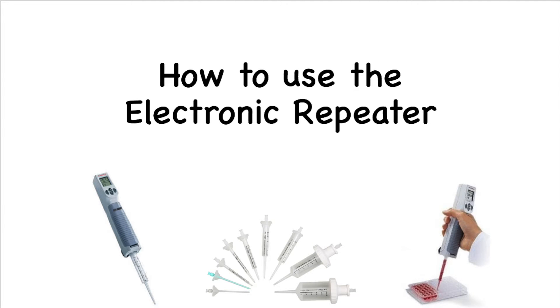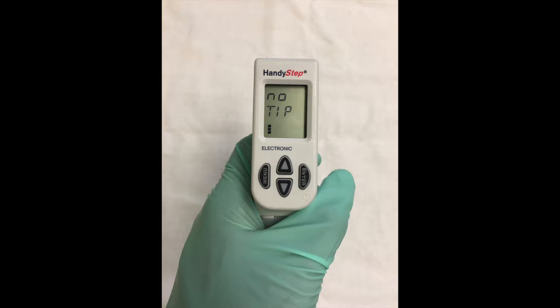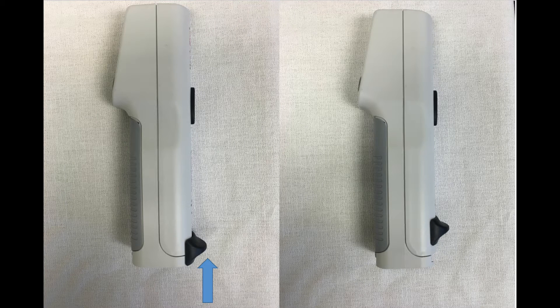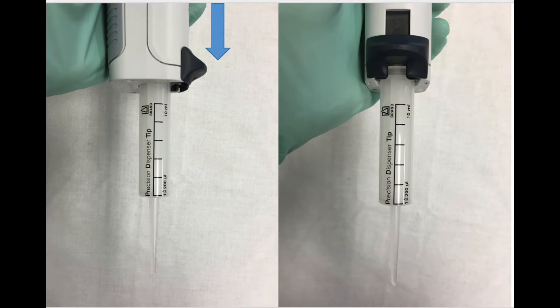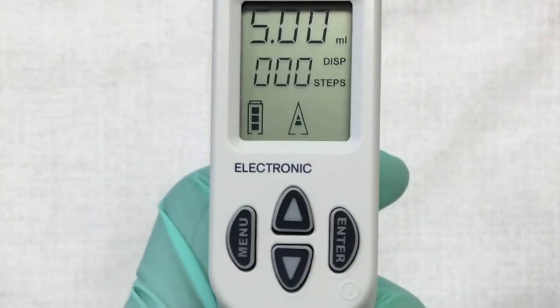Now let's look into how to use the electronic repeater. To begin the process of dispensing with the electronic repeater, first look at the screen. It should read NO TIP. To insert the tip, push up on the recognition mechanism, then slide the tip inside the device, and then push down on the mechanism.